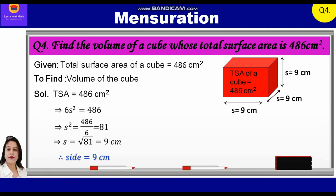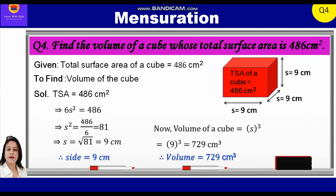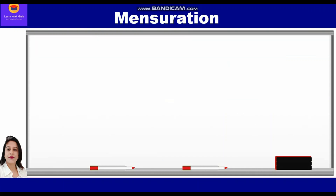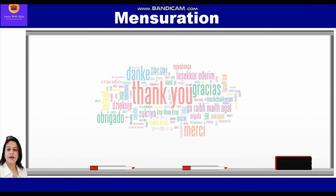Further, the volume of the cube is S³ = 9³ = 729 cm³. So the volume of this cube is equal to 729 cm³. Hope you have understood these questions. Thank you everyone.